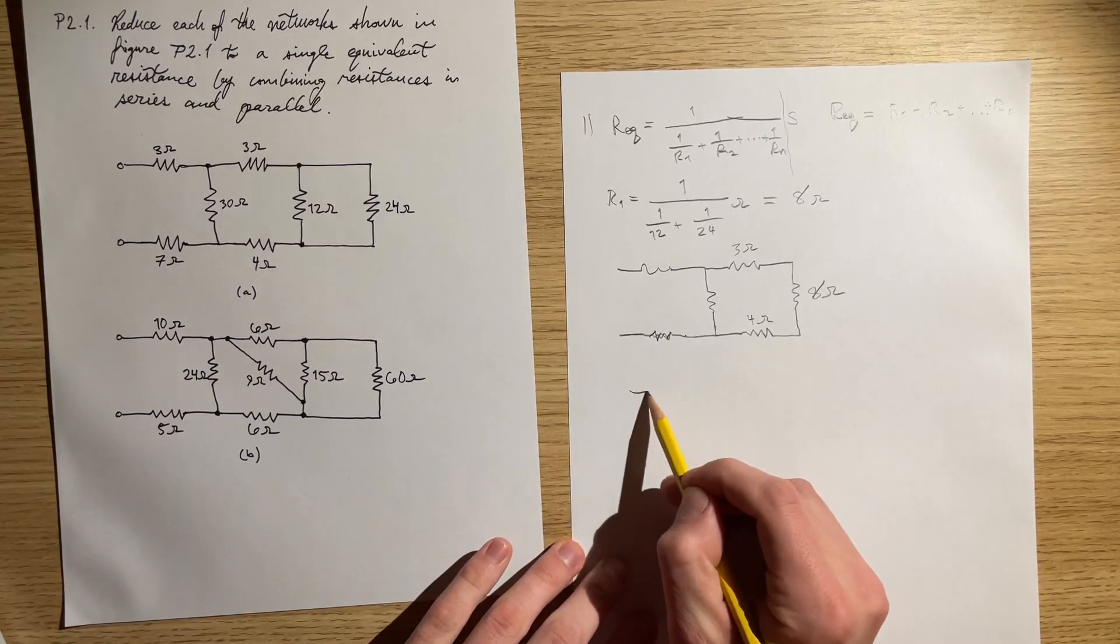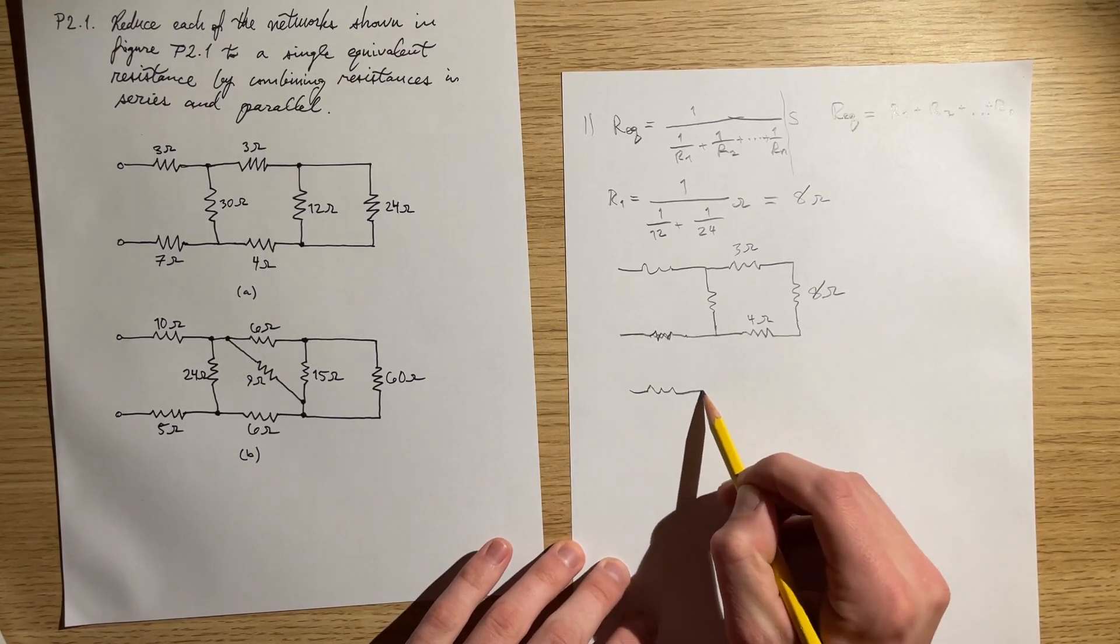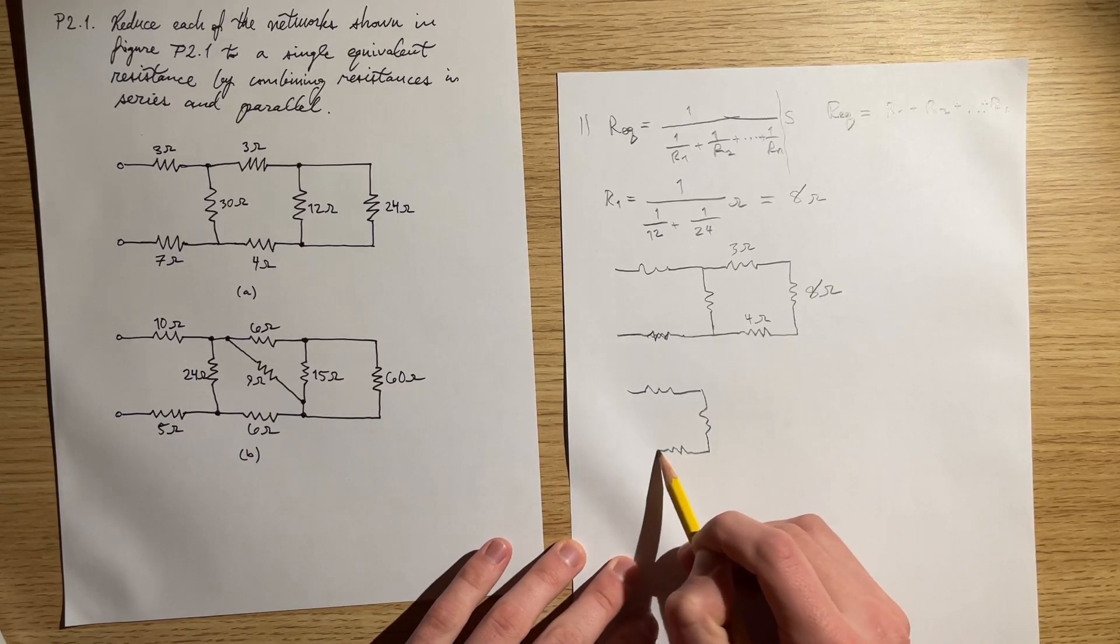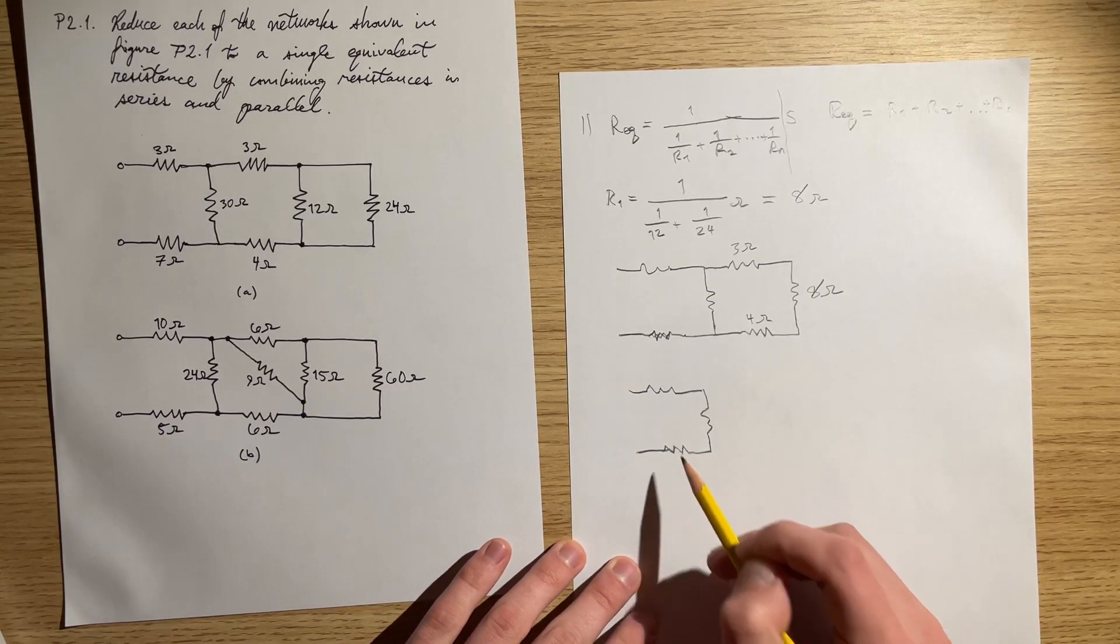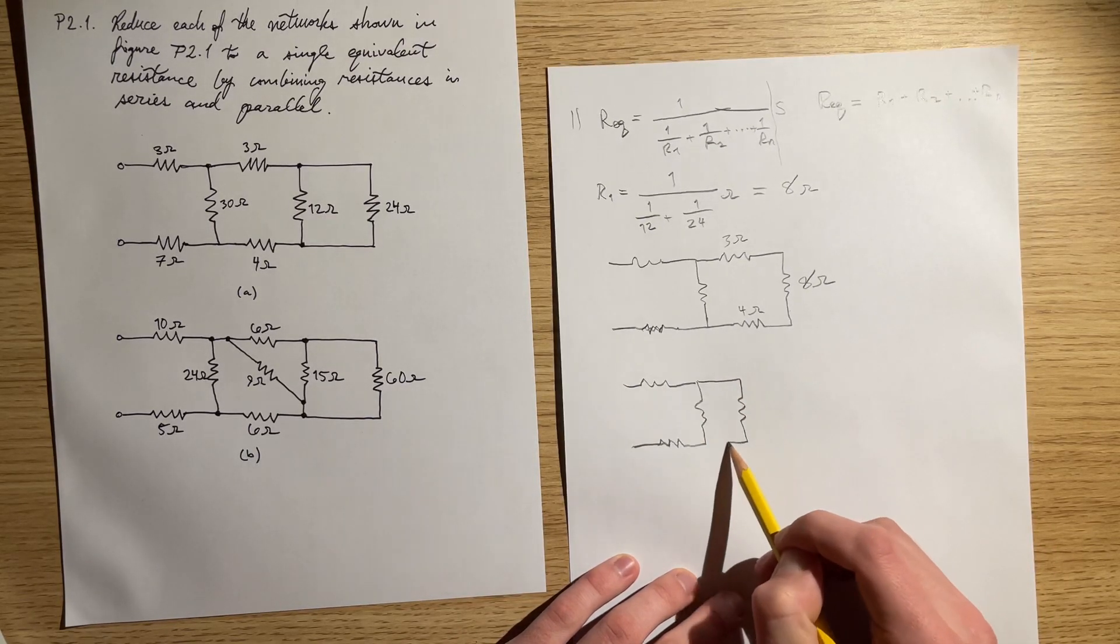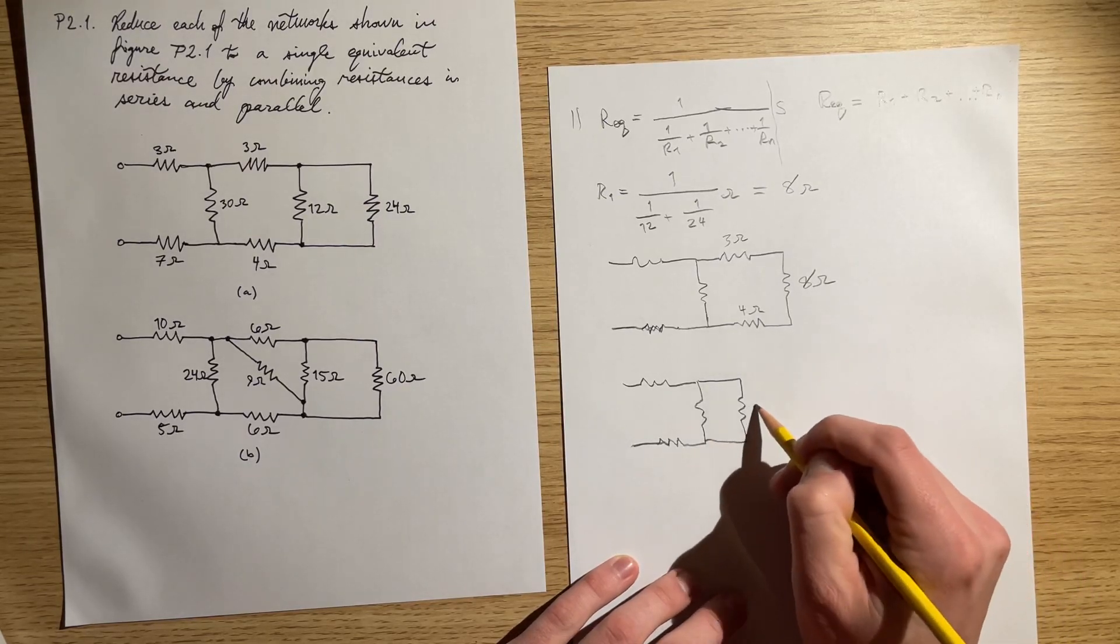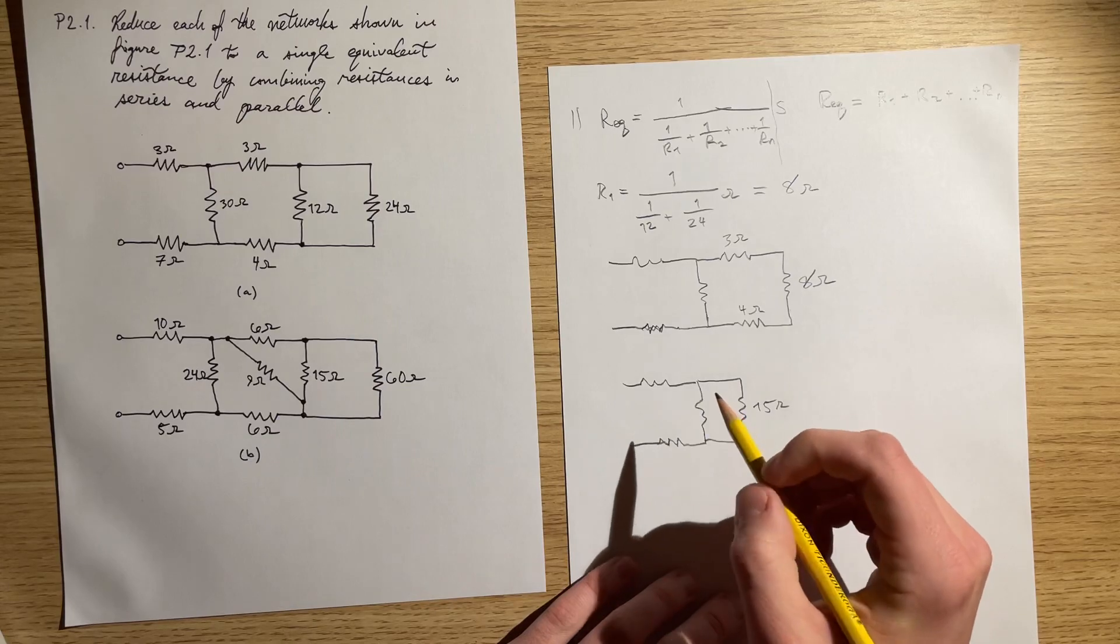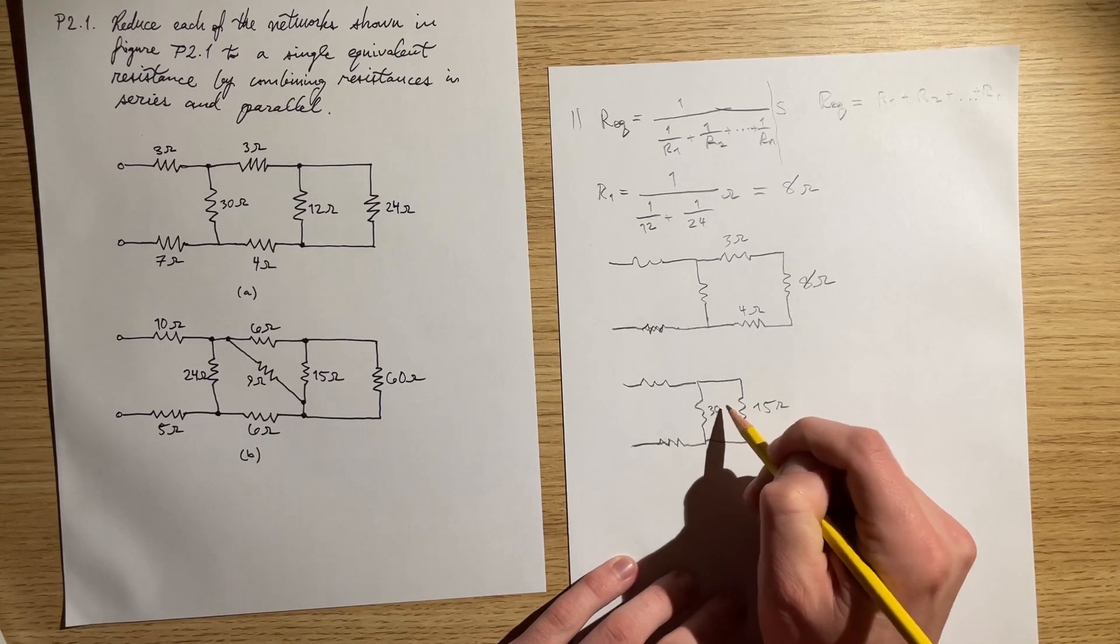Now our circuit simplifies to this. Got to make these resistors look a little bit better. Like that, with this right here being 30.